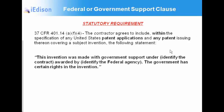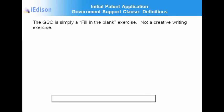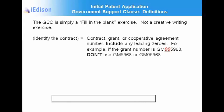Note the quotation marks surrounding the government support statement: 'This invention was made with government support under [identify the grant number], awarded by [identify NIH]. The government has certain rights in the invention.' For the GSC, it's really just a fill-in-the-blank exercise — this is not a time for creative writing. It's very simple: we fill in the blanks. If there are leading zeros in your grant number, include them. When you see 'identify the contract' in the government support clause, include those leading zeros. Remember, zeros are numbers too.